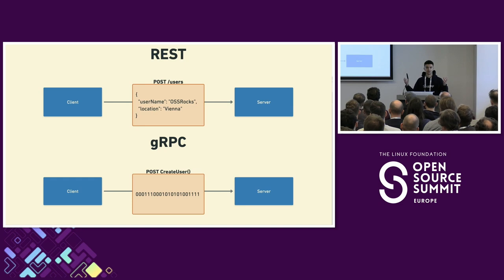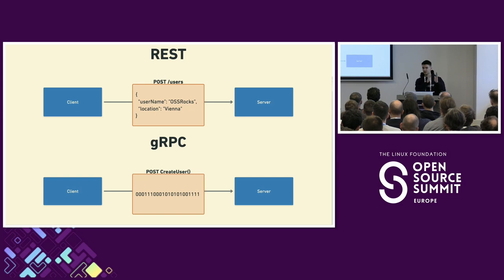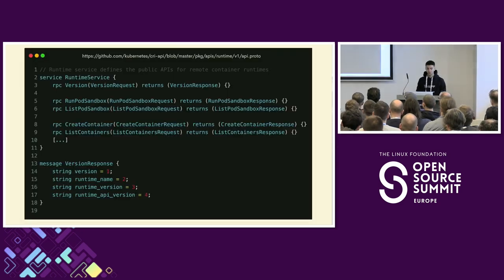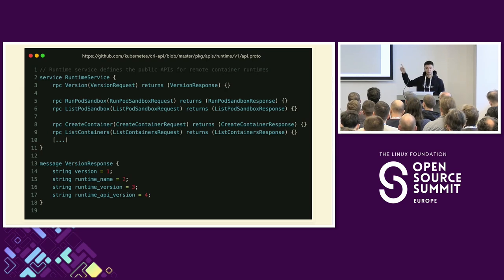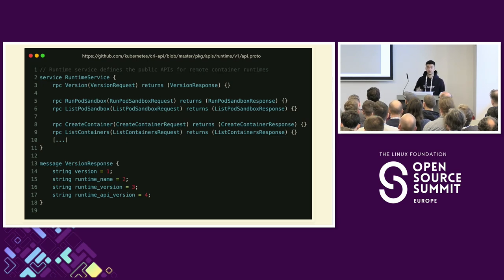Since gRPC uses a binary format, both client and server need to understand what this sequence of zeros and ones means — is it supposed to be an integer, a string, a float, and so on. The way this is done is by using a so-called proto file. A proto file essentially defines the underlying API and how it's going to look. This is the exact proto API of the CRI, which you can find in the Kubernetes group on GitHub in the CRI-API project, under packages/apis/runtime/v1/api.proto.